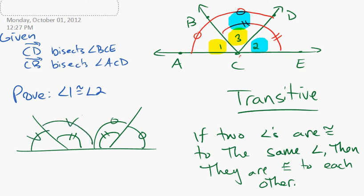This is an example where two angles, these outside ones—two angles are congruent to these two angles, and these two angles happen to be congruent. This is a variation of the same property.